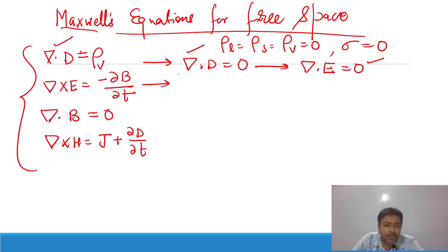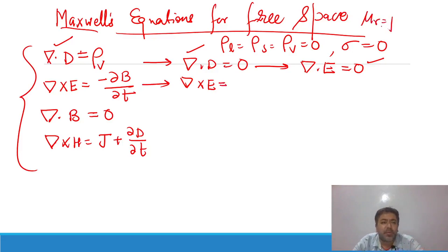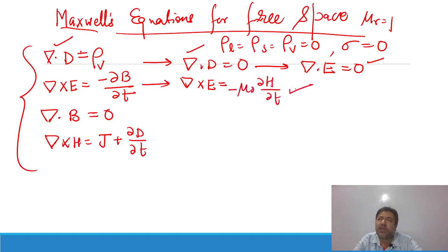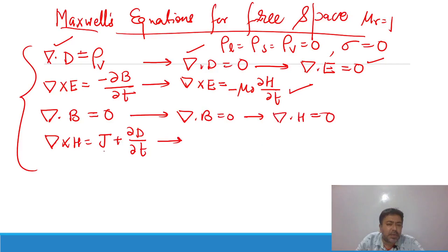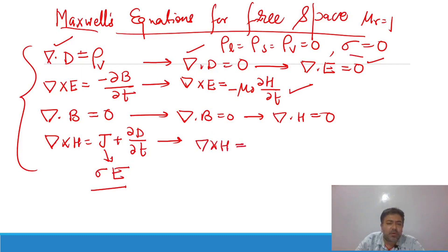For the second equation: ∇×E = −∂B/∂t. In free space, B = μ₀H (since μr = 1), so this becomes ∇×E = −μ₀ ∂H/∂t. For the third equation, ∇·B = 0, and substituting B = μ₀H gives ∇·H = 0. For the fourth equation, J = σE, but conductivity σ = 0 in free space, so J = 0. With D = ε₀E, we get ∇×H = ε₀ ∂E/∂t.